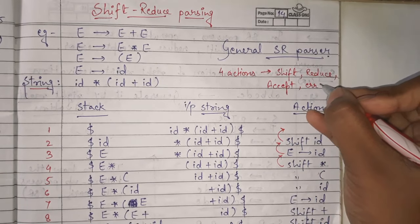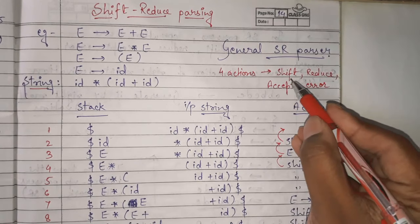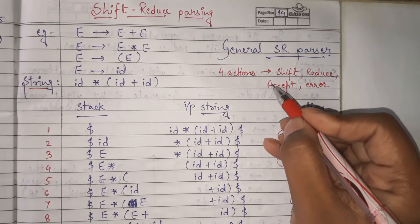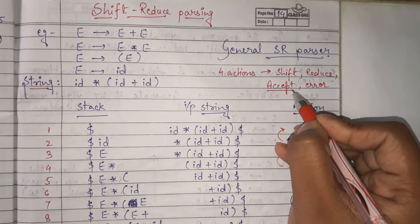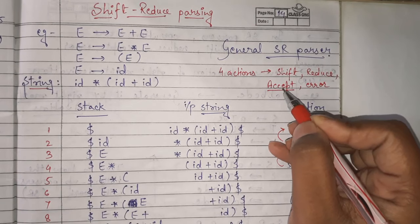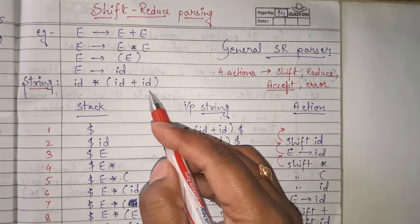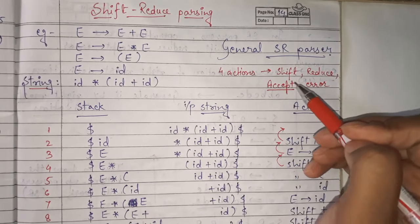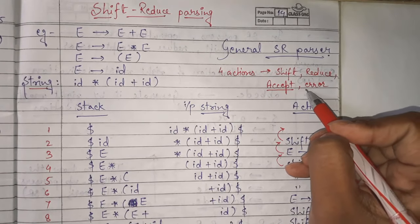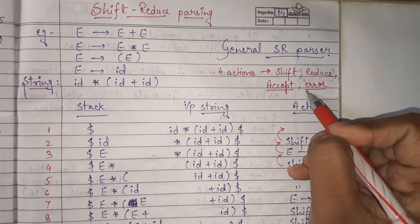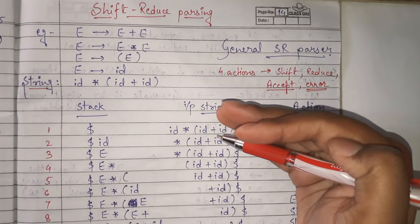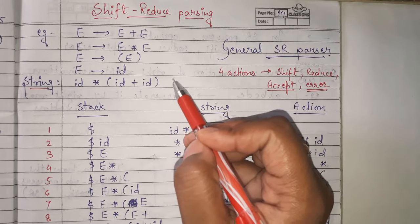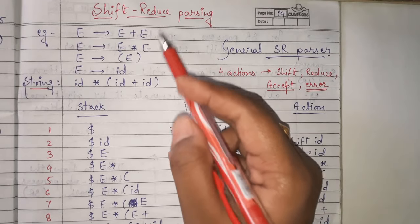With the help of an example, I will show you what shift is, what reduce is, and at the end, if I get accept after all the procedure, I can say that yes, this string can be parsed successfully with this grammar. But if at any step I get an error, I have to stop there and say that the given string cannot be parsed with this grammar.